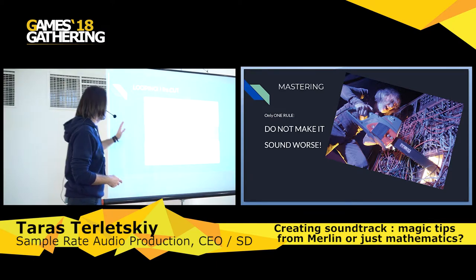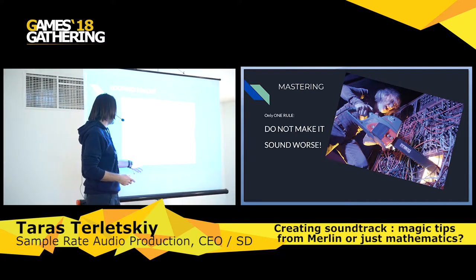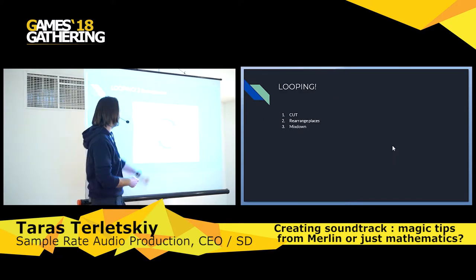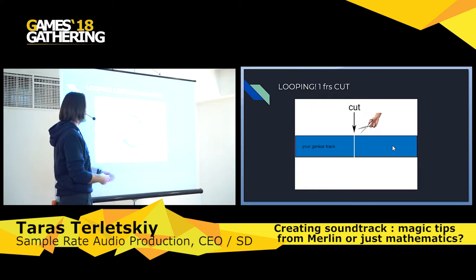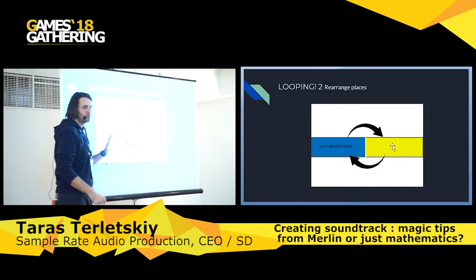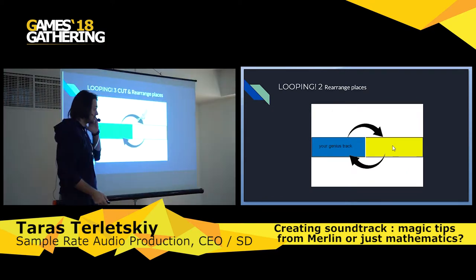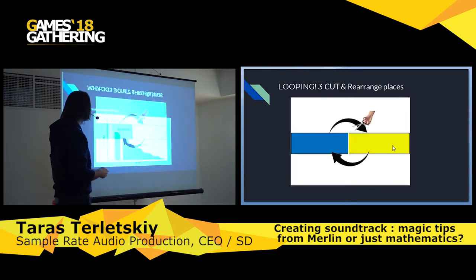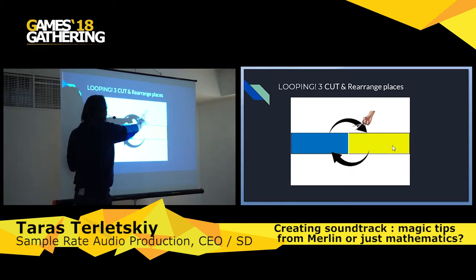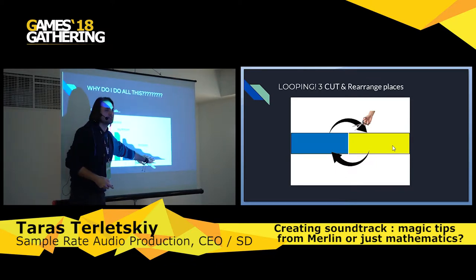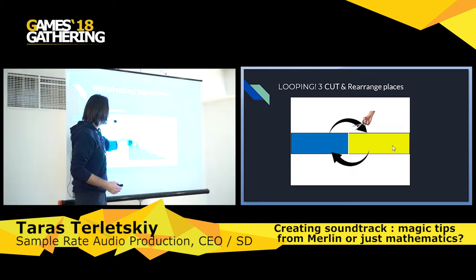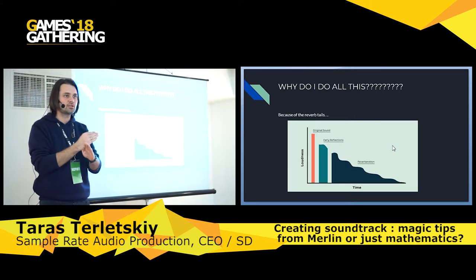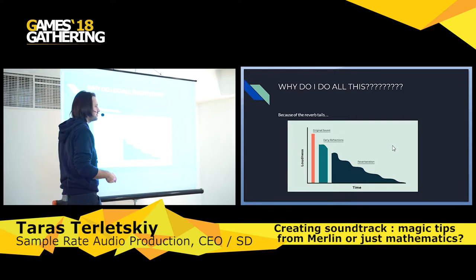My looping method: when mixing down the track, I cut it and replace the part within the session first. Then I mix it down. Then I cut it again in another software - I use Sony Vegas mostly - and rearrange it, then do final mixing and mastering. The reason is reverb tails. If you mix down first and then try to cut without the initial in-session cut, you won't be able to make the crossfade right - you'll hear the beginning abruptly, and your client will too.